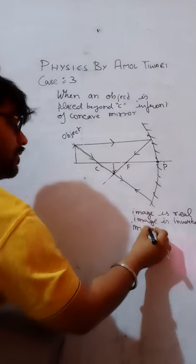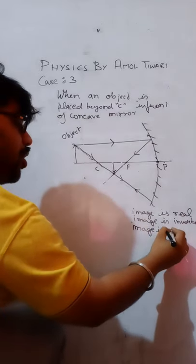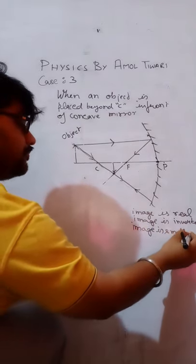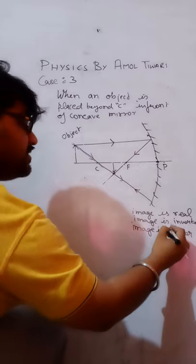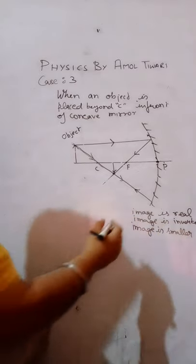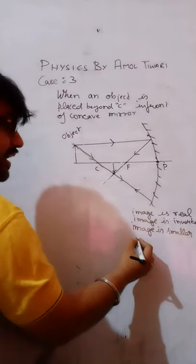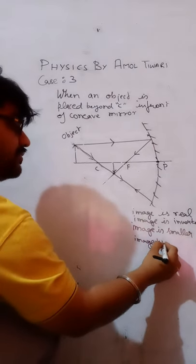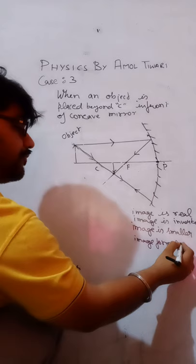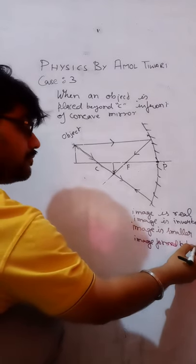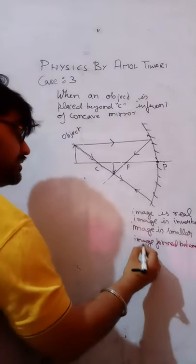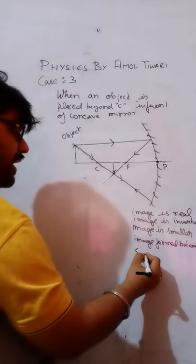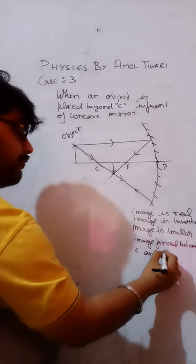Image is smaller, and one more thing, image is formed between center of curvature and focus.